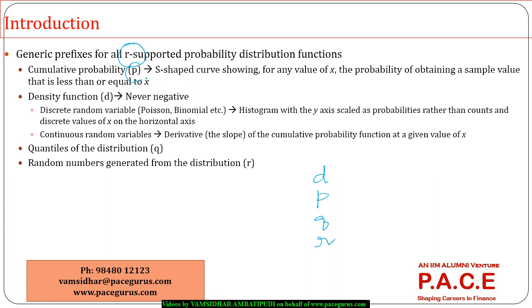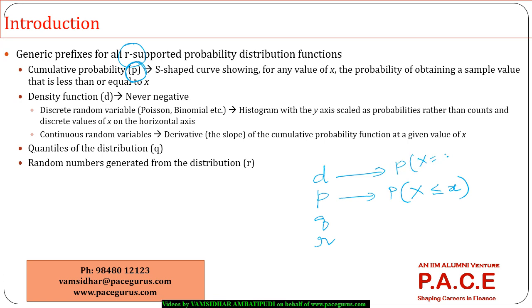If I am giving a prefix as P, it means I am trying to find out the cumulative probability, which is the probability that X takes on values less than or equal to x. When I put a D, it is like a density function. In the case of discrete variables, it gives the probability that X is equal to x.